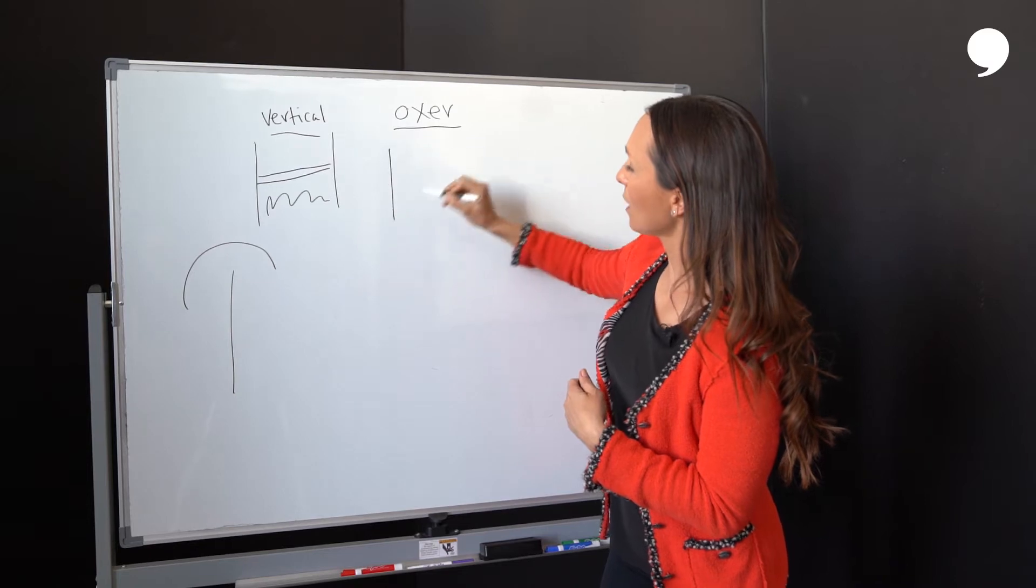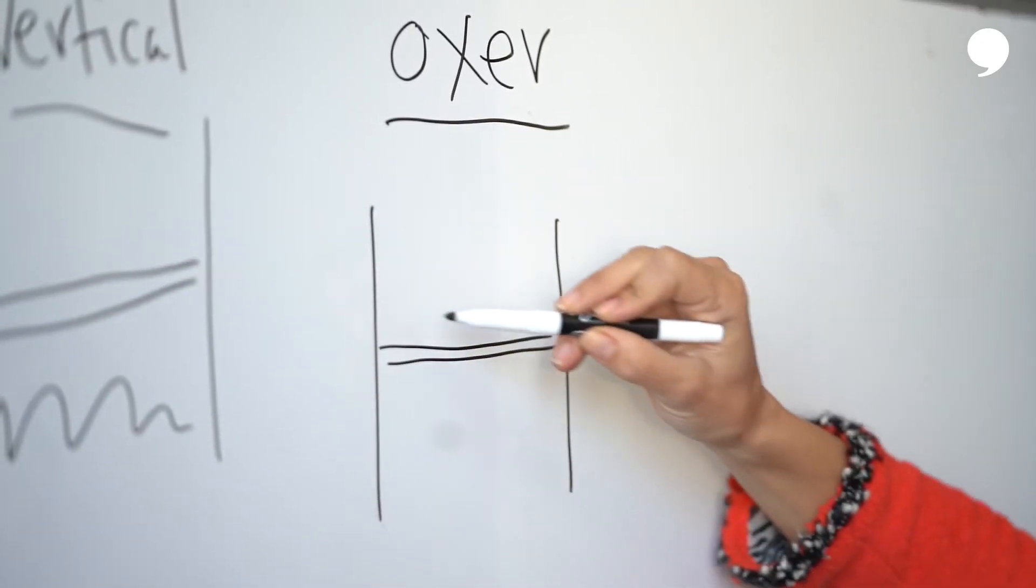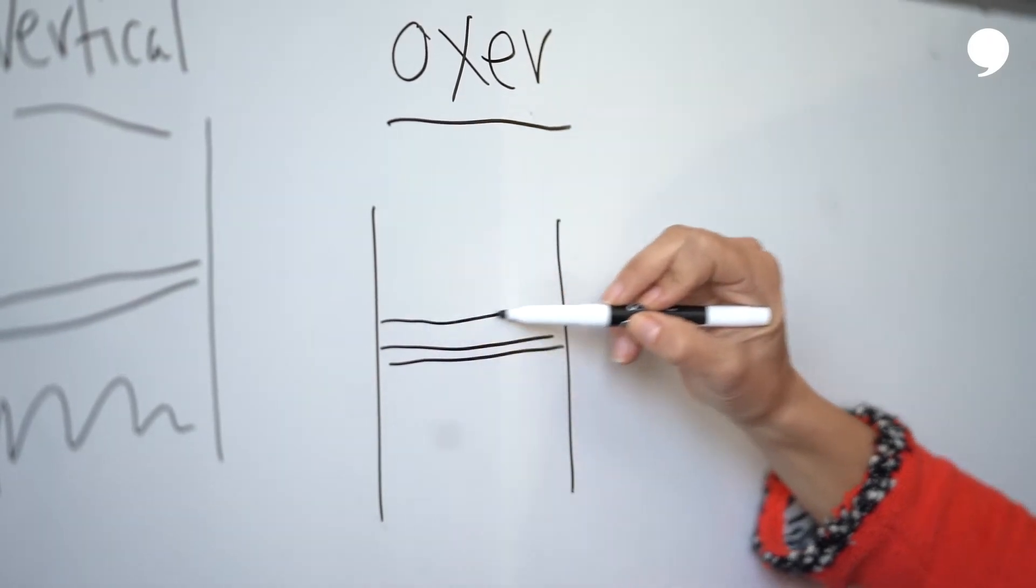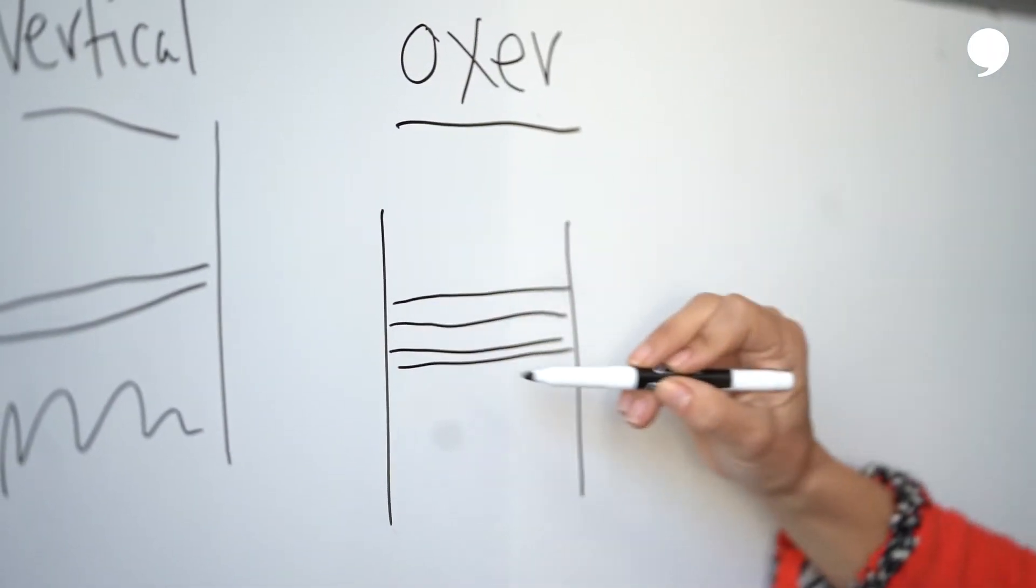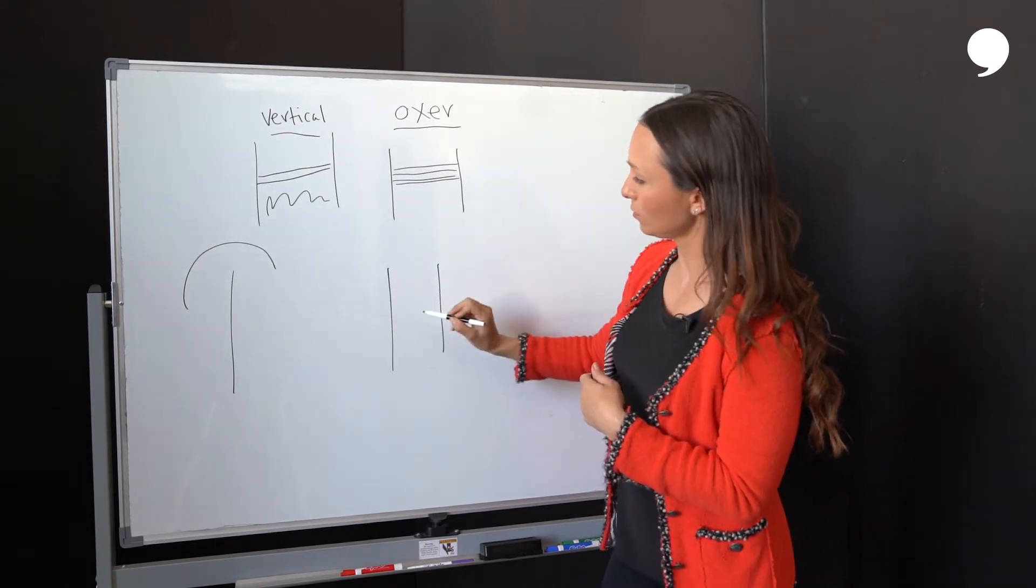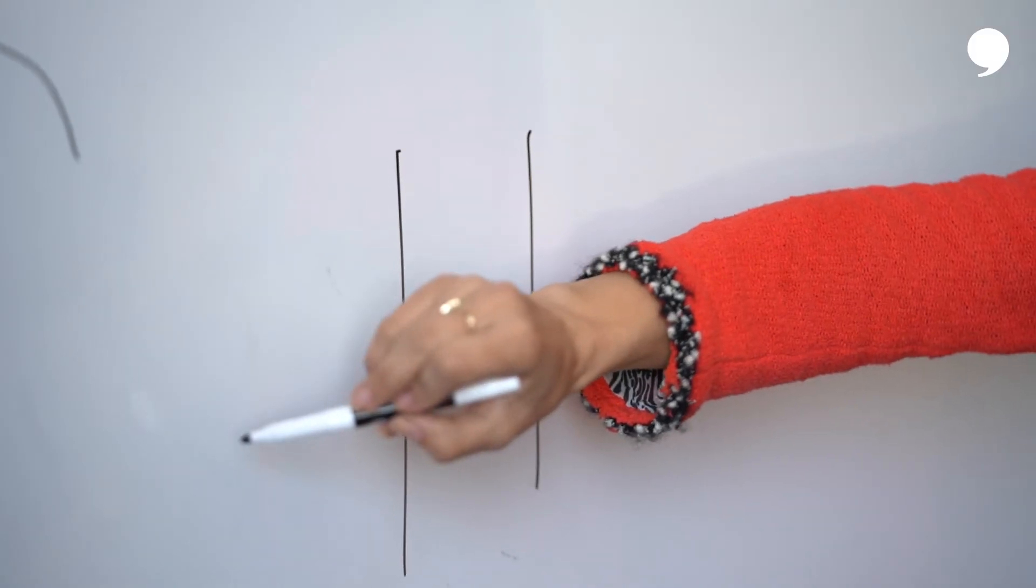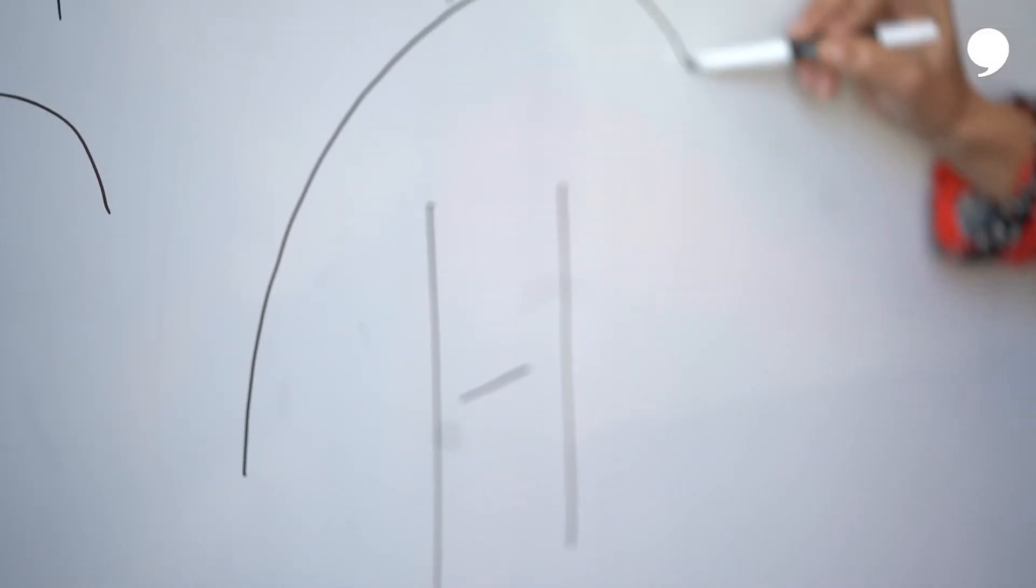An oxer will have the standards, will have the rails, and then there will be another one right behind it, either a little bit higher or the same level. Now these are hard because they can be narrow or they can be very wide. And a horse has to clear not only the front part but the back part.